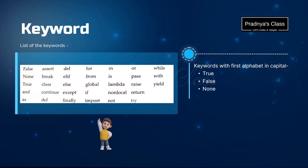Let's check out the first token, that is keyword. Keywords are special words which have some reserved meaning to the programming language. Here is the list of the keywords. Out of all these keywords, three keywords are special — True, False, and None — because the first alphabet is capital.